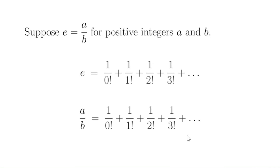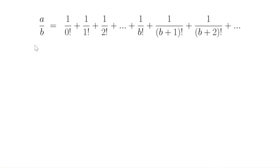So a over b equals the sum of the reciprocals of the factorials. We'd like to clear out some of these fractions. We have a b in the denominator, but we're going to do more than just multiply by b — we're going to multiply both sides by b factorial, to clear out the factorials as well. In the denominator we have 0 factorial, 1 factorial, 2 factorial, eventually up to b factorial and then b plus 1 factorial. So we separate the right-hand side into the part up to the b factorial term, and then the part beyond b factorial.